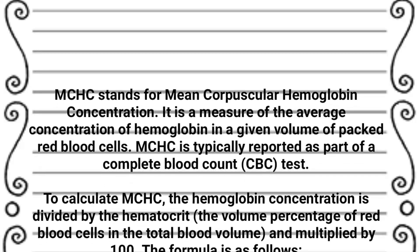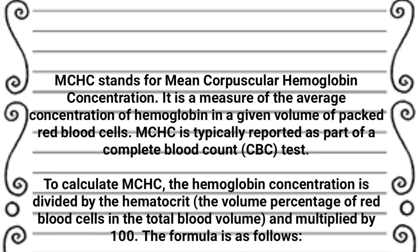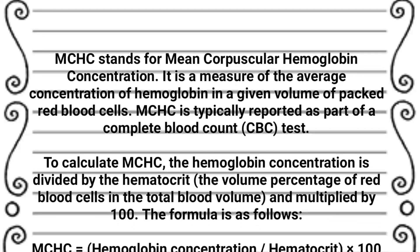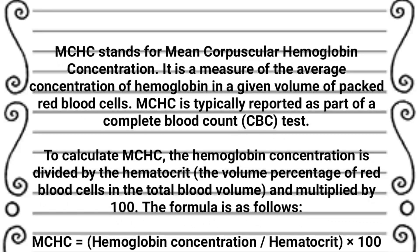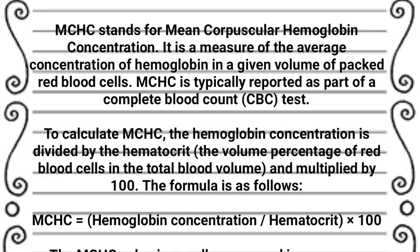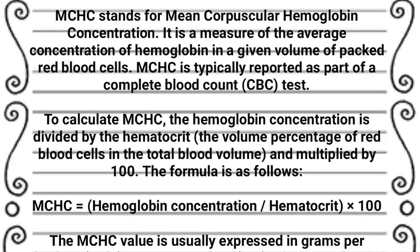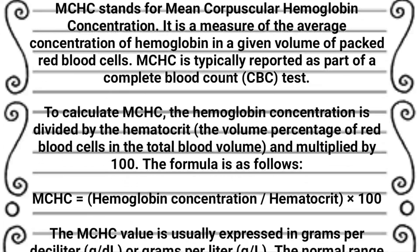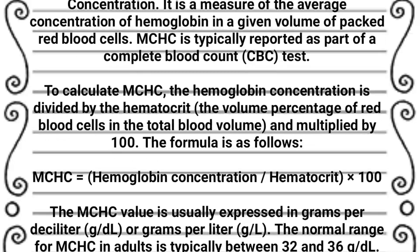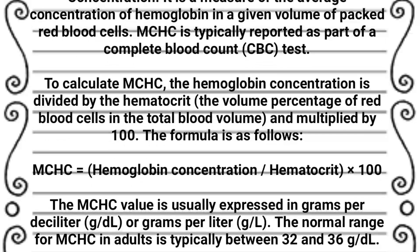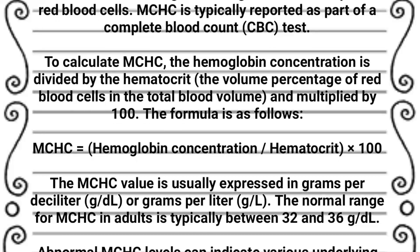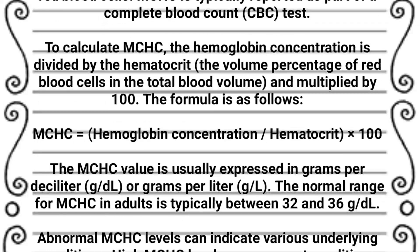To calculate MCHC, the hemoglobin concentration is divided by the hematocrit — the volume percentage of red blood cells in the total blood volume — and multiplied by 100. The formula is: MCHC = (hemoglobin concentration / hematocrit) × 100.